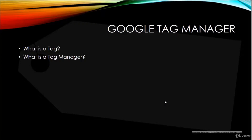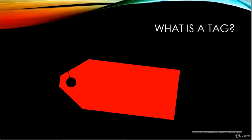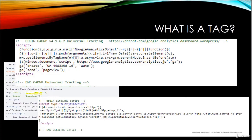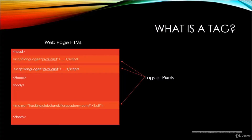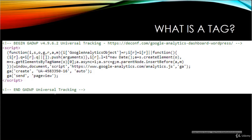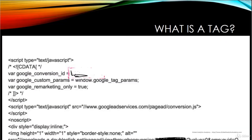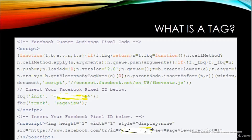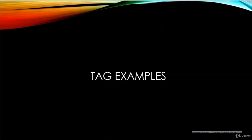In this lecture we are going to look at what is a tag and what is a tag manager. Tags are snippets of code — generally JavaScript or clear GIF images — that are provided by third parties for you to put on your web pages. These third parties use the data collected via these tags to enable reporting and targeting. Examples include Google Analytics, Google AdWords, Facebook tracking pixel, and many more.